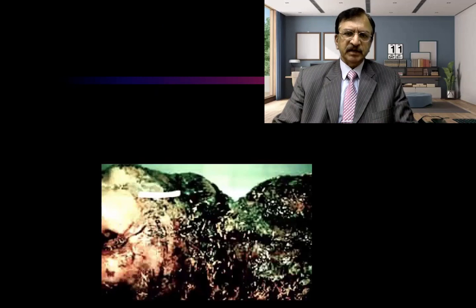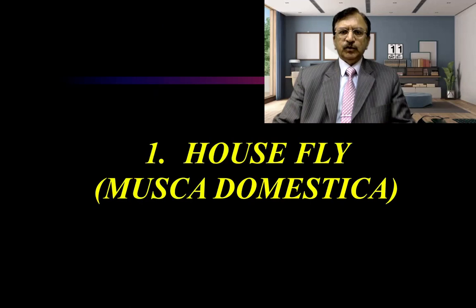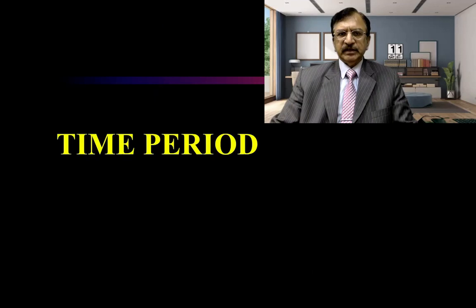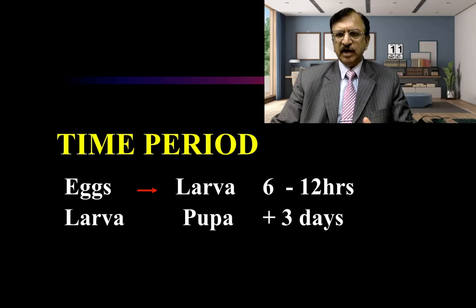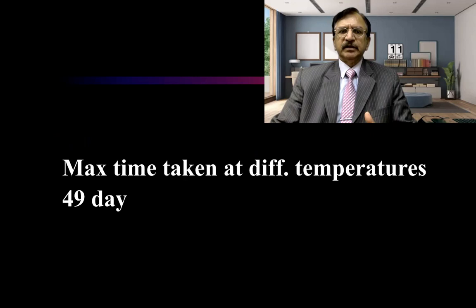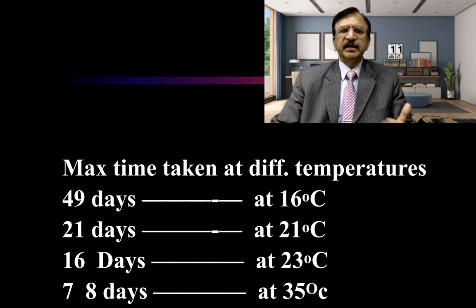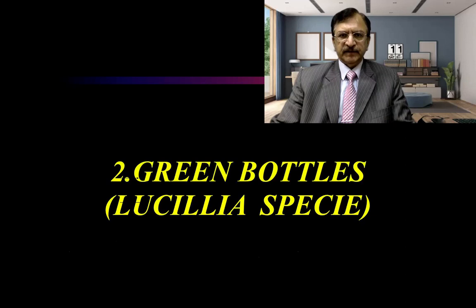Here is a picture of larvae on a dead body. The house fly, Musca domestica, is the common house fly. Its life cycle shows: eggs hatch into larvae in 6 to 12 hours, larvae into pupae in 3 days, and pupae into adult fly in 3 to 4 days. Maximum time varies at different temperatures: 49 days at 16°C, 21 days at 21°C, 16 days at 23°C, and 7 to 8 days at 35°C.